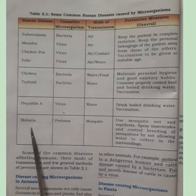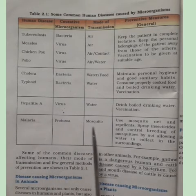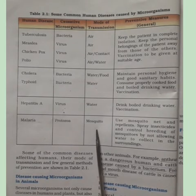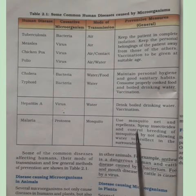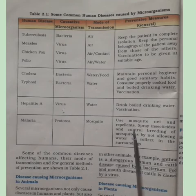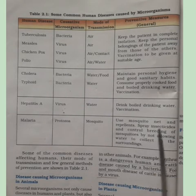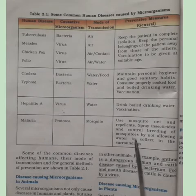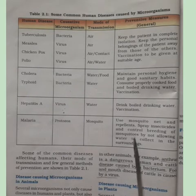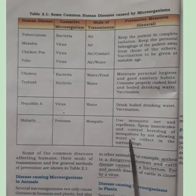Malaria is caused by a protozoan, and the female Anopheles mosquito is the carrier. Preventive measures include using mosquito nets and repellents, spraying insecticides, and controlling the breeding of mosquitoes by ensuring water does not collect or become stagnant in the surroundings.